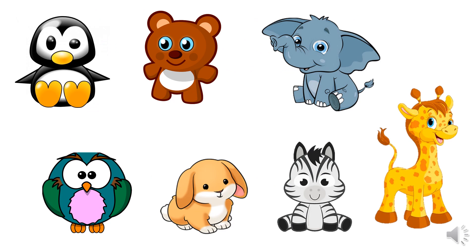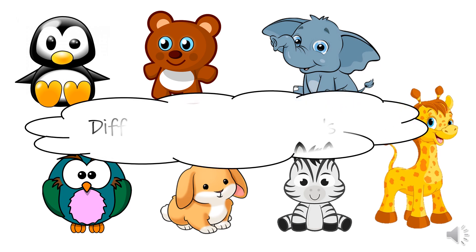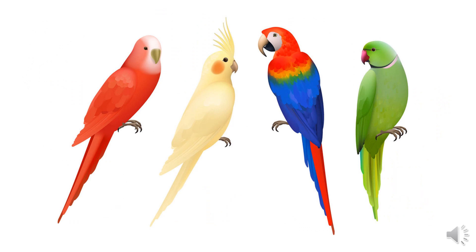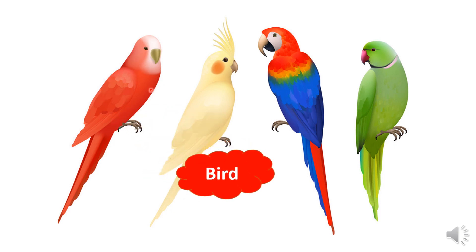First of all, look at this picture. What can you see? We have different animals and different sizes and colors of them. So we will learn today the differences among animals. Now, look at this beautiful picture. What can you see? What is this animal? It has feathers and a beak and wings. So this is the bird, of course.